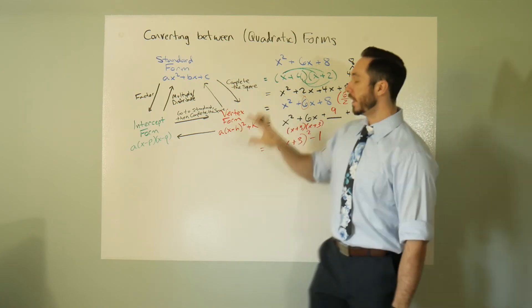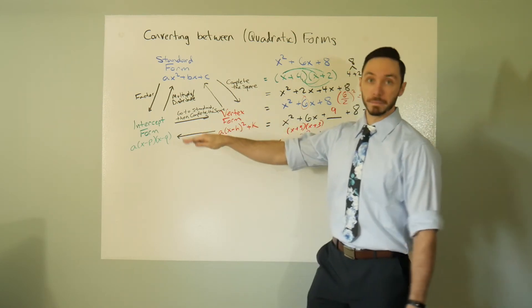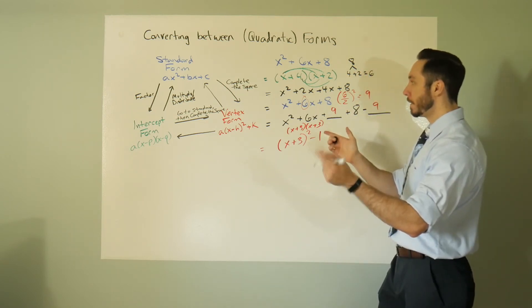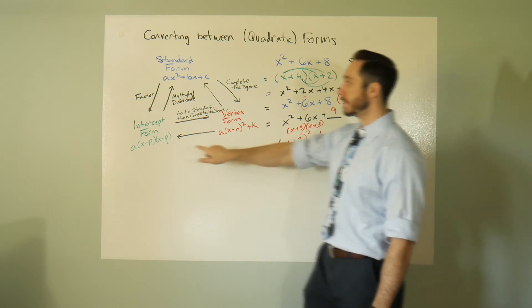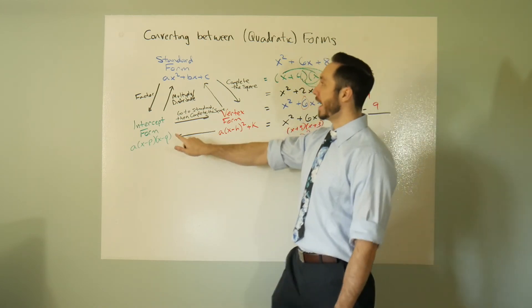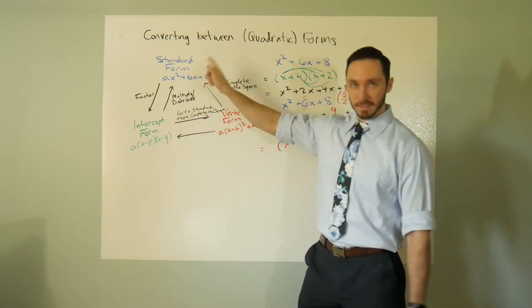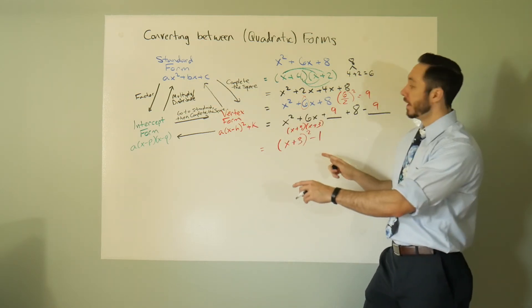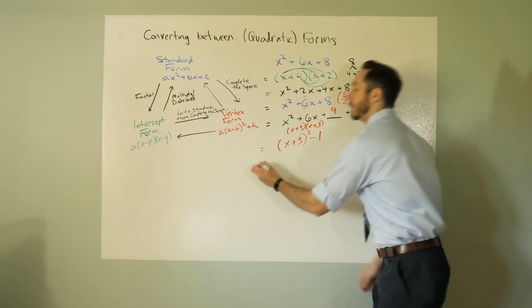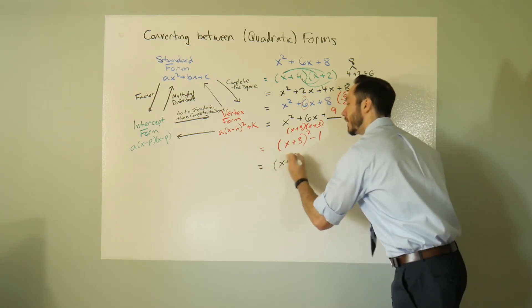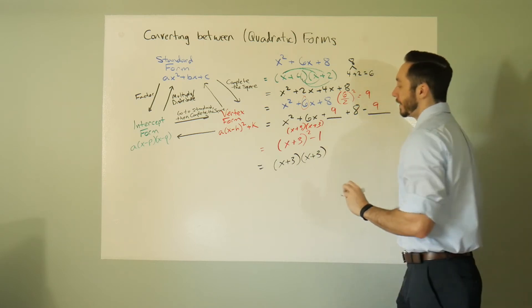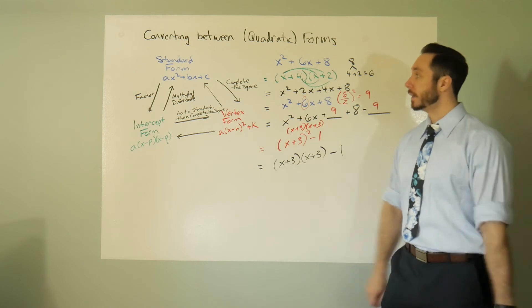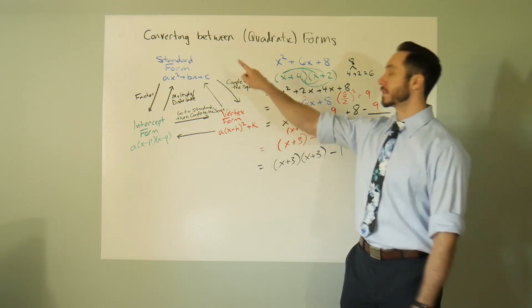We went from intercept to standard in both ways. We just have to now go from vertex into standard and then vertex into intercept. So if we attempted to go from vertex into intercept, I have to again revisit standard, reason being is I have to multiply this out. I need to rewrite this as x plus 3 times x plus 3 and then this minus 1.